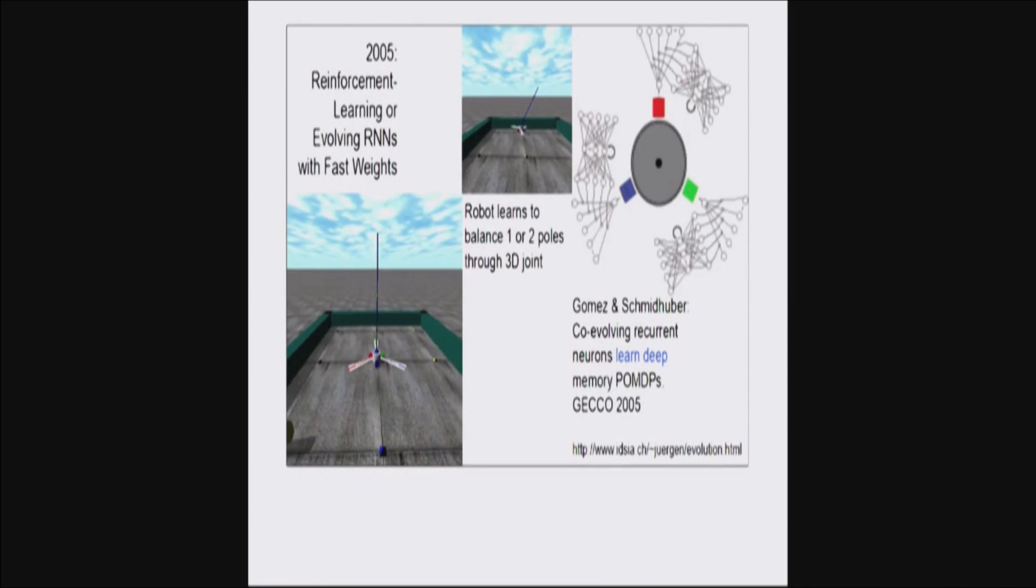Now, fast weights can also be used to reinforcement learn things, and that's what Faustino Gomez showed in 2005 with robots that reinforcement learned to do rather complicated things back then. And he used fast weights to achieve that, to learn deep memory POMDPs, where you had to memorize stuff for a long time.